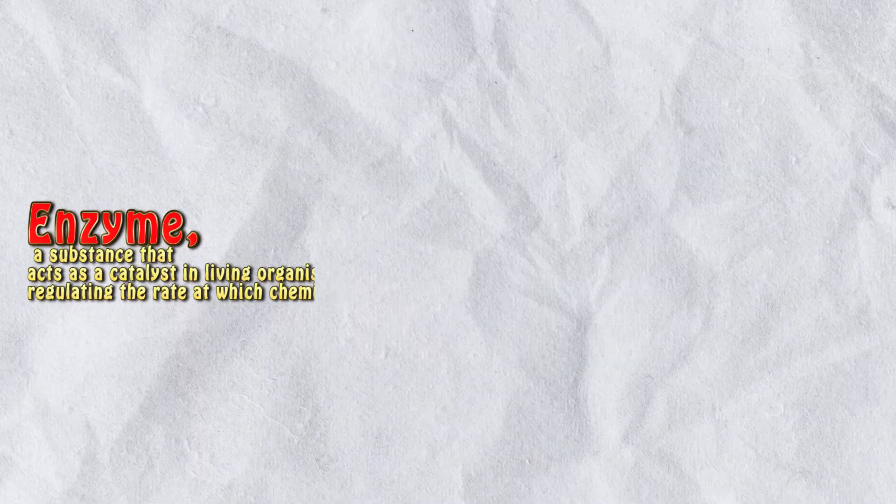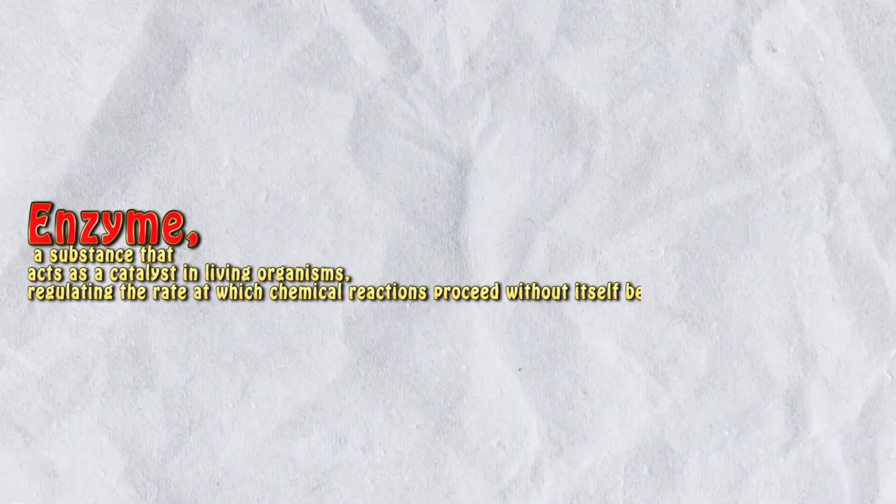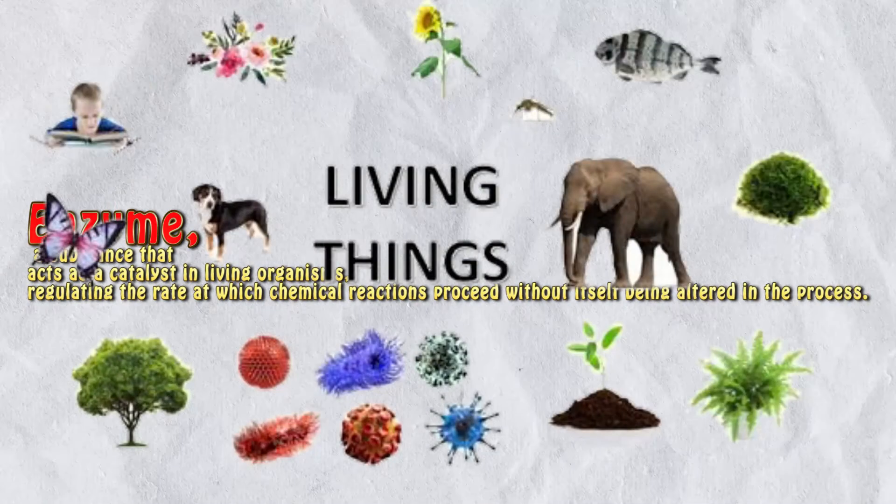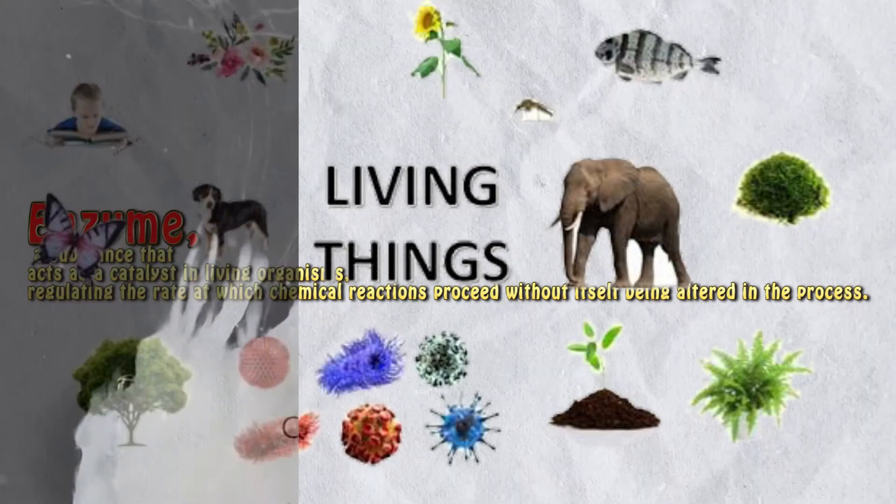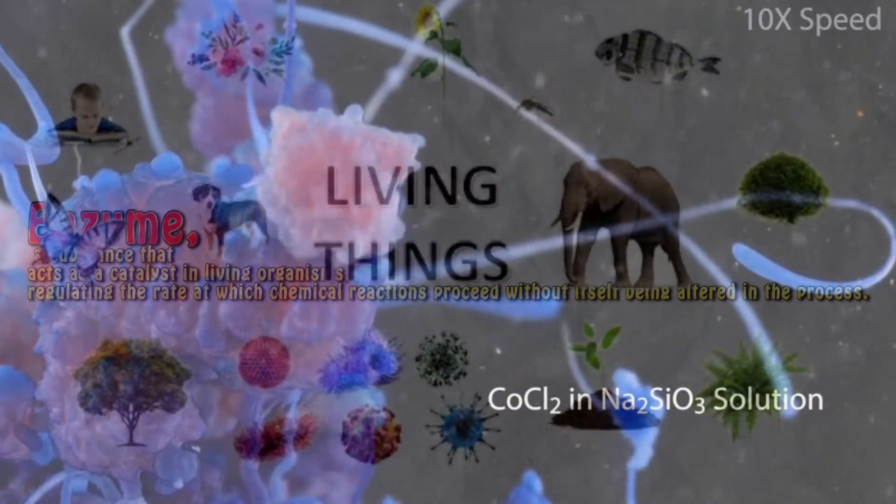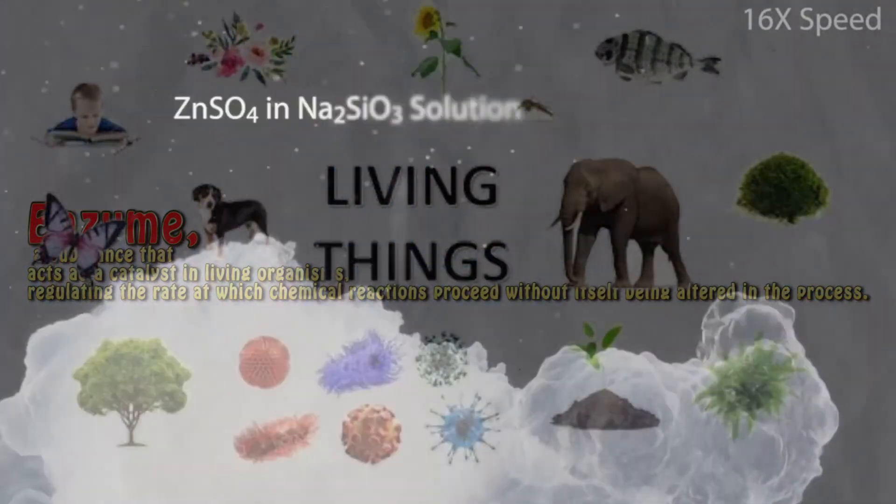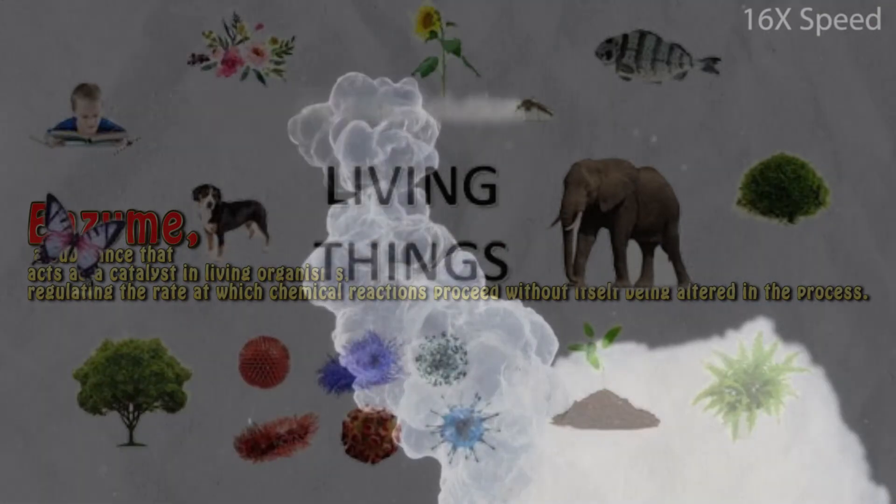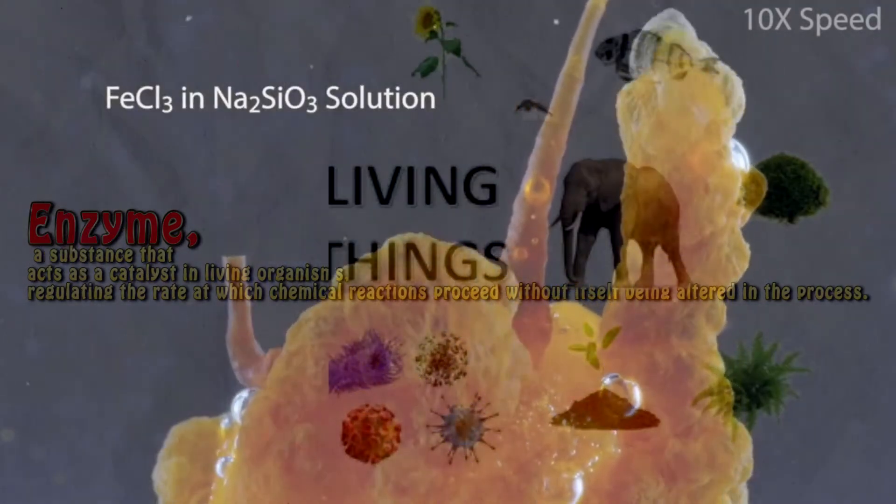Enzyme: a substance that acts as a catalyst in living organisms, regulating the rate at which chemical reactions proceed without itself being altered in the process. The biological processes that occur within all living organisms are chemical reactions, and most are regulated by enzymes.